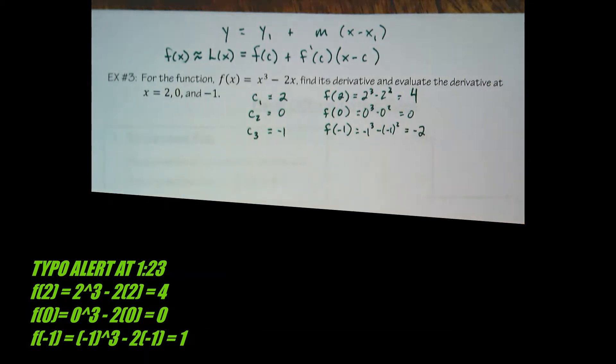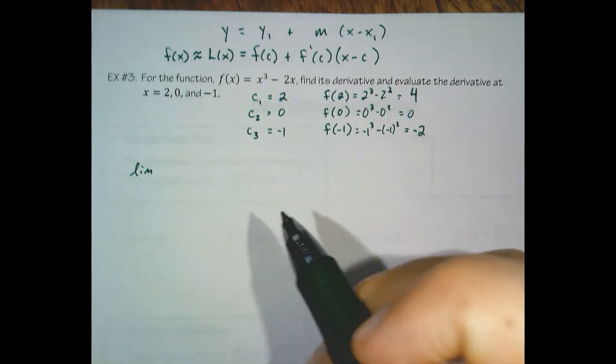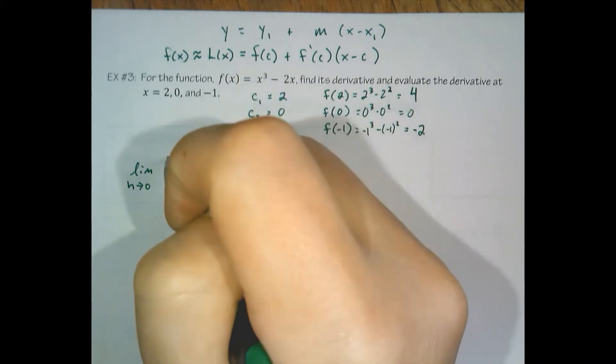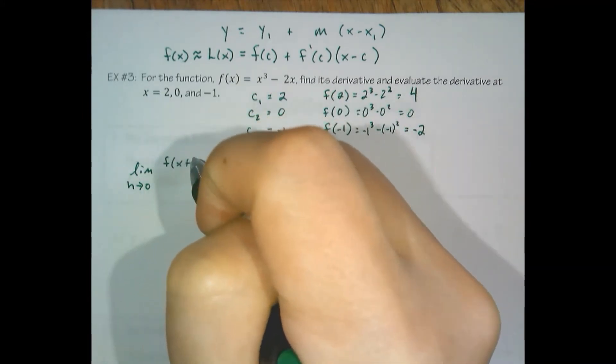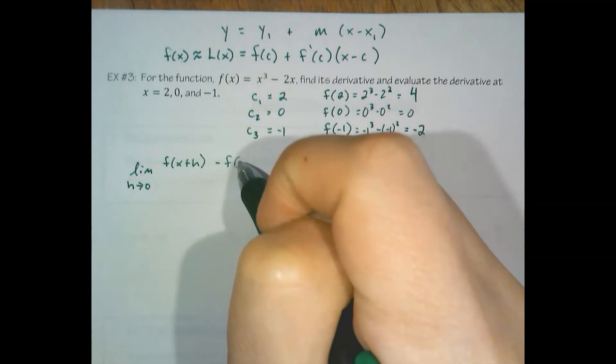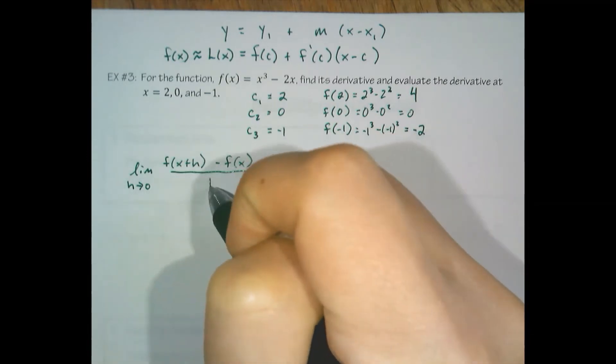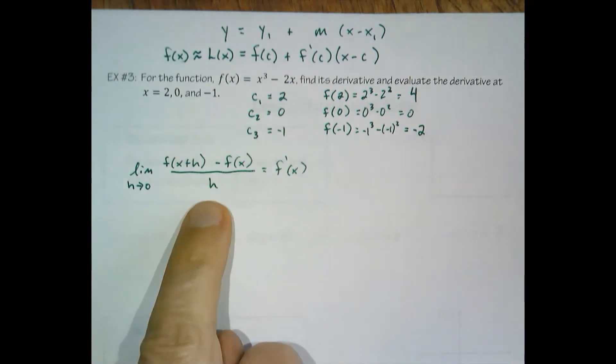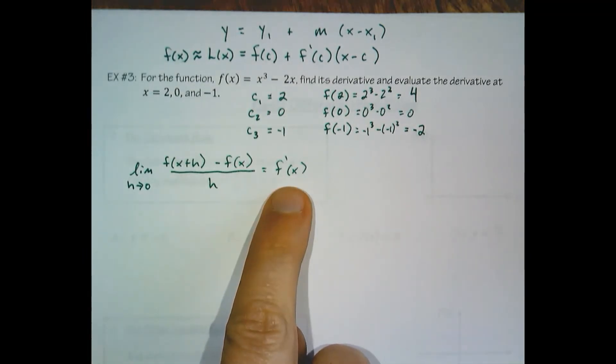Okay, so we have our centers, we have our y coordinates, and now we just need to find the derivative. The formal definition of the derivative is going to be f of x plus h minus f of x all over h. This is the limiting process on the difference quotient to find the derivative.